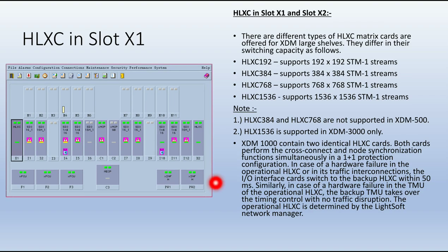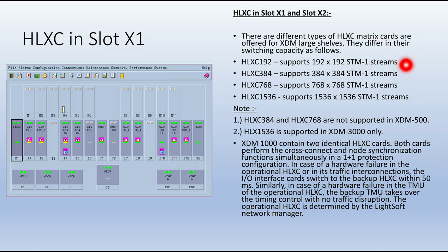The HLXC matrix card is fixed in slots X1 and X2. There are different types of HLXC matrix cards offered for the XTM, differing in switching capacity: HLXC 192 supports 192×192 XTM1 streams; HLXC 384 supports 384×384 HTM1 streams; HLXC 768 supports 768×768 HTM1 streams; and HLXC 1536 supports 1536×1536 HTM1 streams.